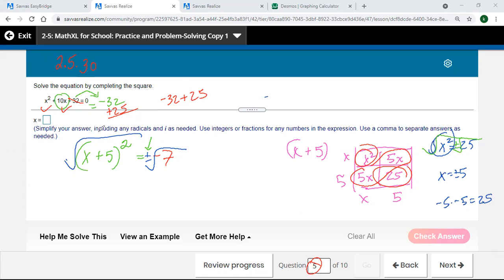All right, so keep going here. The square root here undid that. So I've got my x plus 5 on that side, equal my plus or minus.